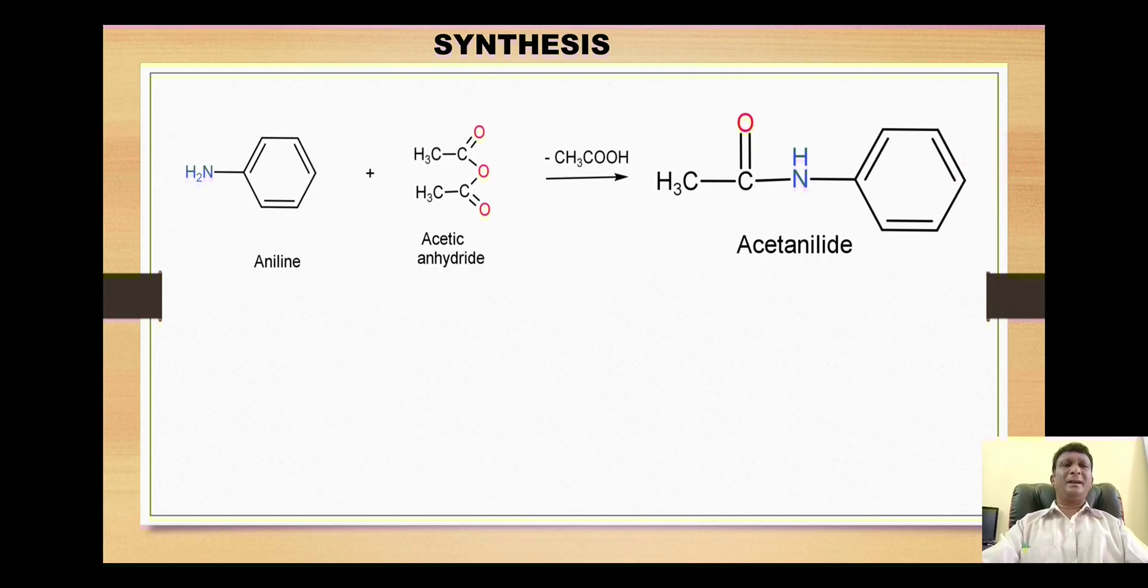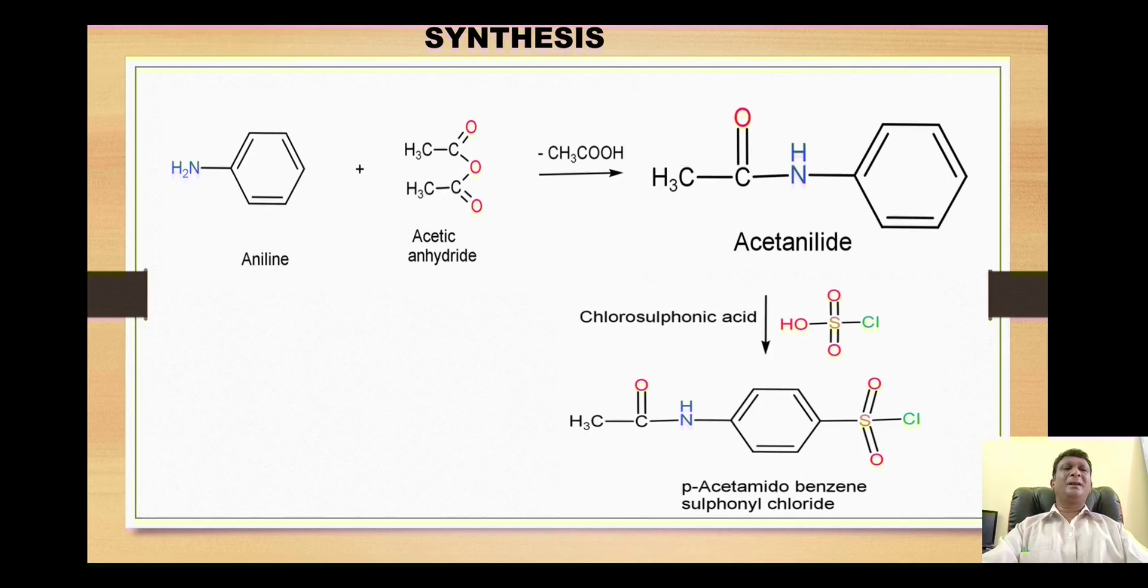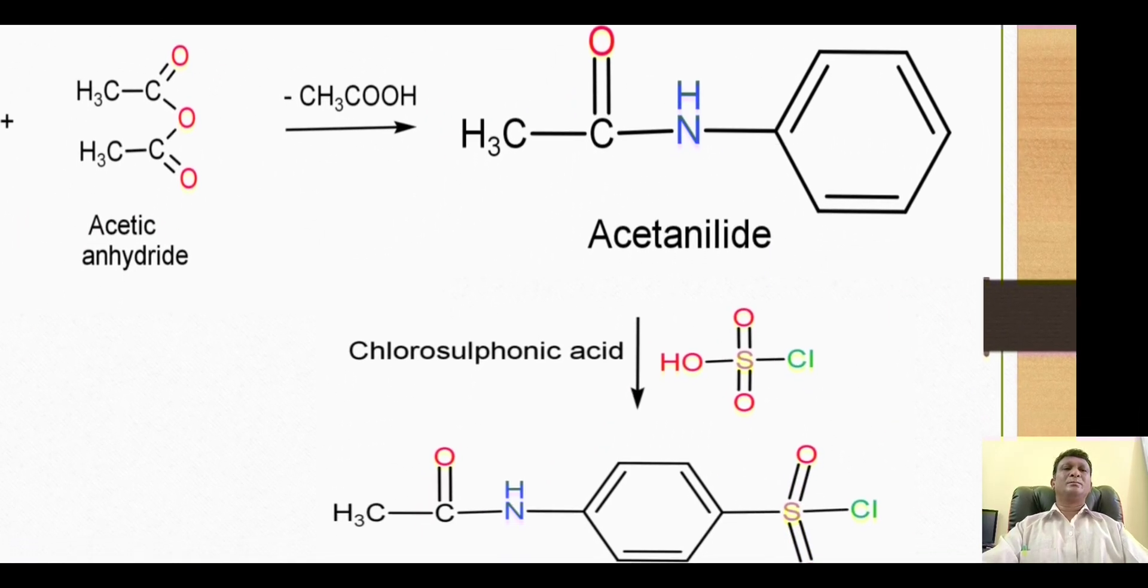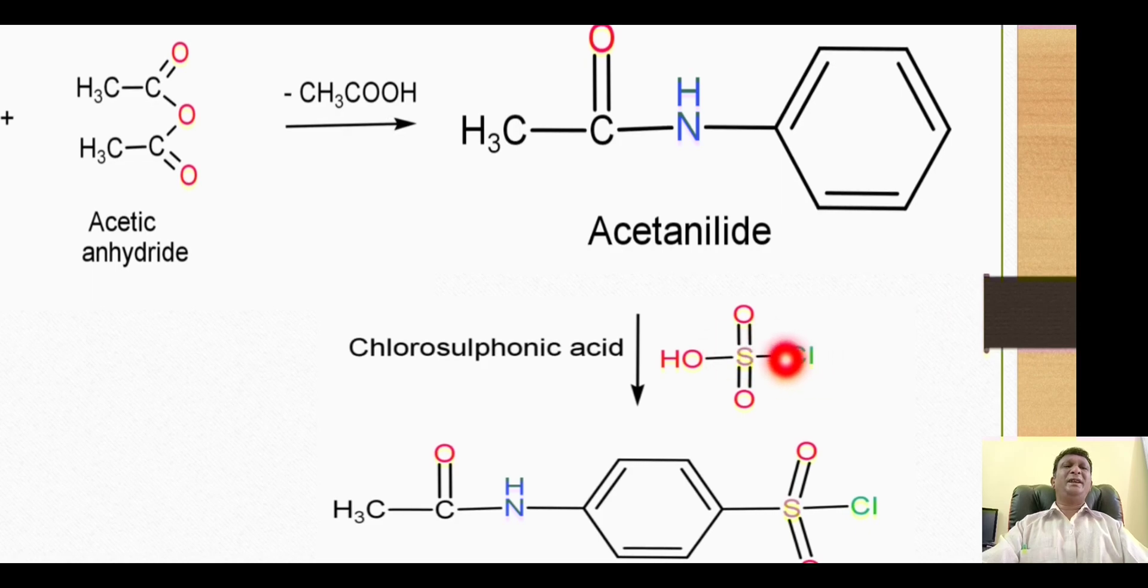Thus when acetanilide is reacted with chlorosulfonic acid, ClSO3OH, we get an electrophilic substitution reaction. Because this sulfur is attached to three powerful electron-withdrawing oxygens, the sulfur acquires a partial positive charge and is in need of electrons.